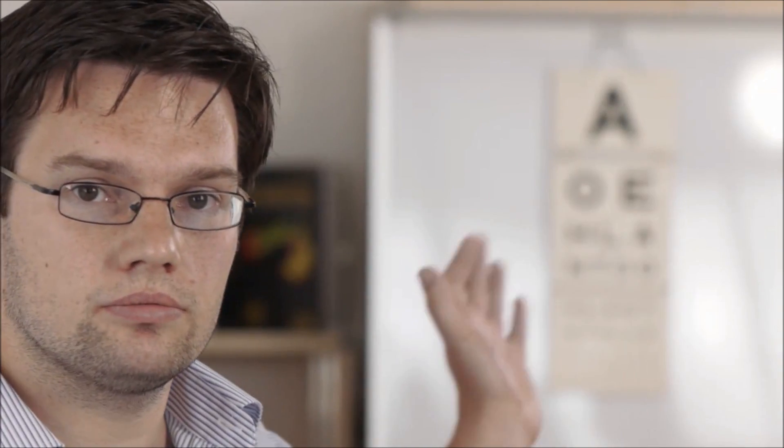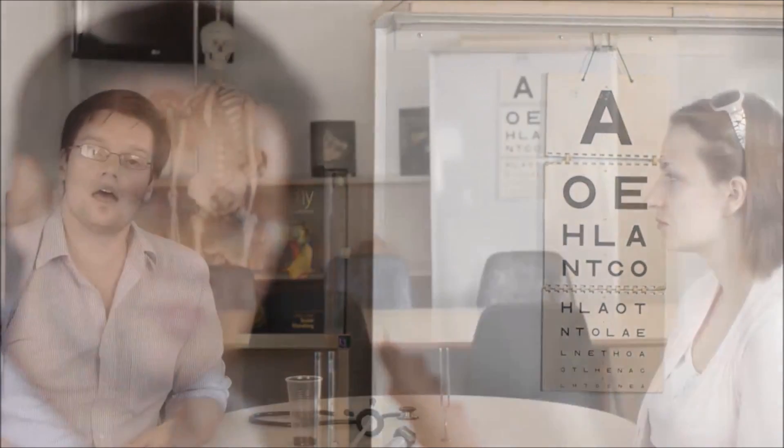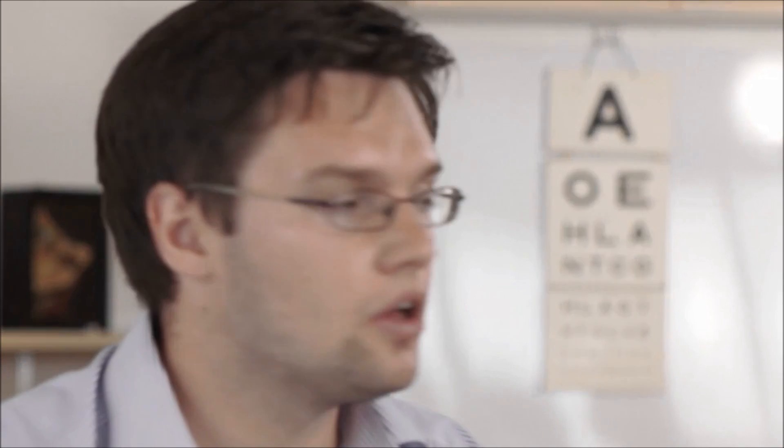To start with, we test acuity using the Snellen chart and ask the patient to position themselves 6 metres away. Would you please position yourself 6 metres away from the chart? If the patient normally wears glasses or contact lenses, you should advise them to keep wearing them whilst looking at the Snellen chart.